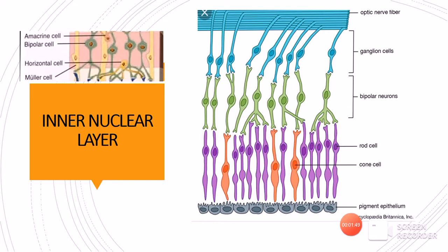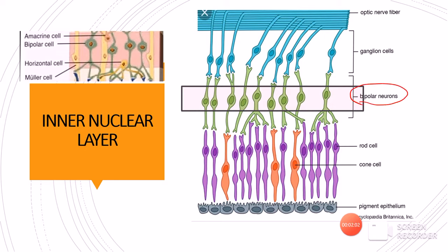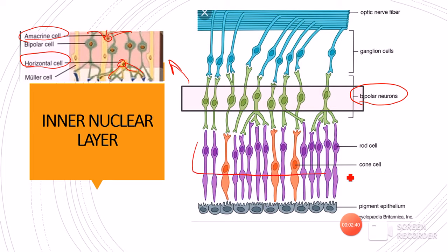Next is the inner nuclear layer. It contains the nuclei of the bipolar neurons. There are also other cells present at this level — the horizontal cells and the amacrine cells. Since predominantly the nuclei of bipolar cells are present, this is called the inner nuclear layer. The outer nuclear layer is formed by the nuclei of rods and cones, while the inner nuclear layer (towards the vitreous) is formed by the nuclei of bipolar cells, amacrine cells, and horizontal cells.